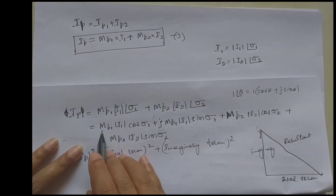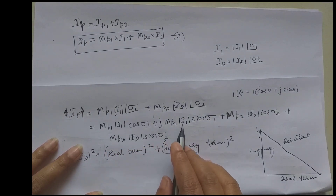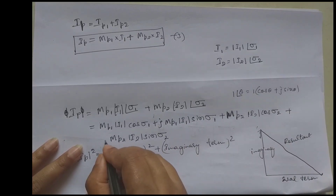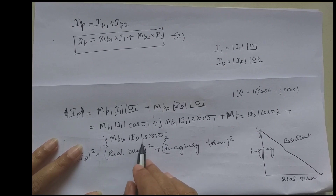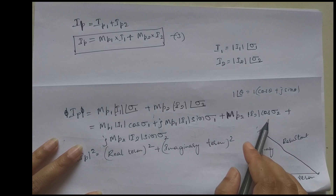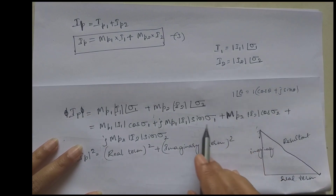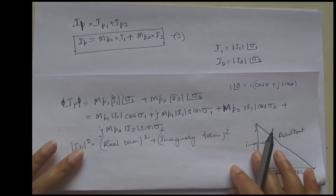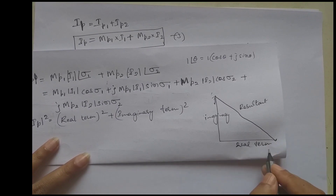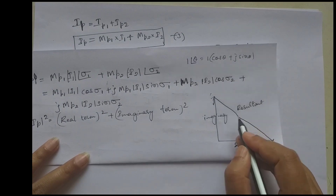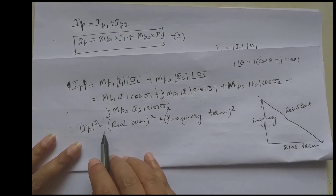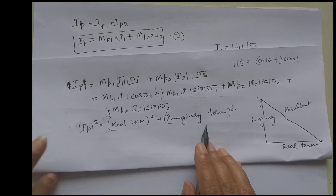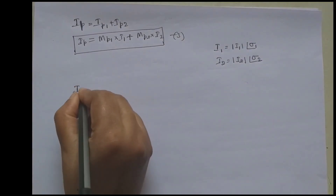Expanding IP = MP1·I1∠σ1 + MP2·I2∠σ2, we get: real part = MP1·I1·cosσ1 + MP2·I2·cosσ2, and imaginary part = MP1·I1·sinσ1 + MP2·I2·sinσ2. In complex numbers, the real term is on the x-axis and the imaginary term on the y-axis. From Pythagoras' theorem, IP² = (real part)² + (imaginary part)².